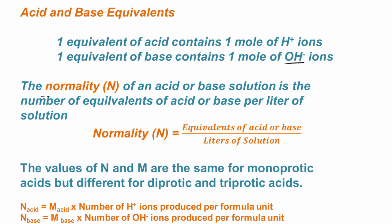So some definitions here. One equivalent of an acid contains one mole of hydrogen ions. And one equivalent of a base contains one mole of hydroxide ions. So normality, then, is defined as the number of equivalents of acid or base divided by the liters of solution.